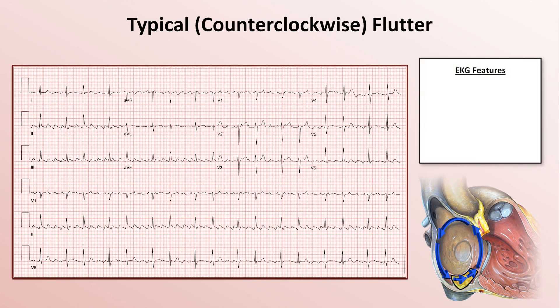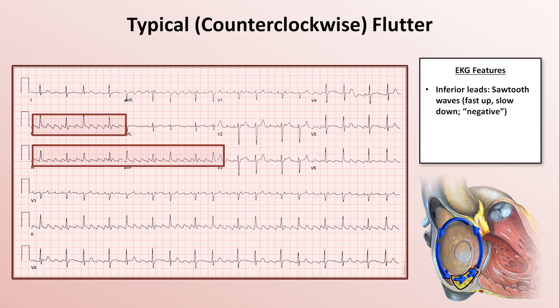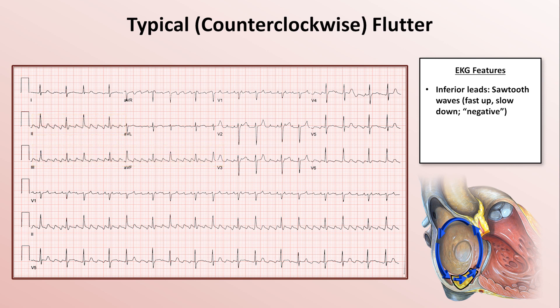Now I'll discuss the specific EKG features of different forms of atrial flutter, starting with typical counterclockwise flutter. Here we see the classic sawtooth waves in the inferior leads. The sawtooth waves in typical flutter specifically have a steep upstroke and a more shallow downstroke. This morphology is sometimes referred to as 'negative flutter waves,' though I don't personally use that terminology. Another finding in typical flutter is in V1, where there is an isoelectric segment separating positive waveforms that look like rapidly occurring P waves.